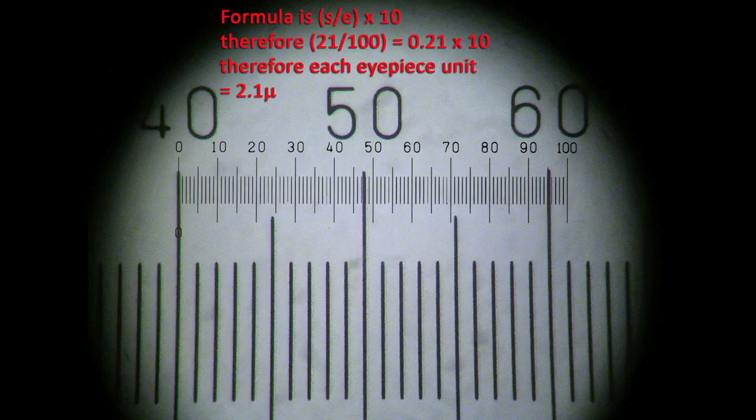So if with a 10x objective each IP unit was approximately 10 microns, then accordingly each unit using this 40x objective will represent 10 divided by 4, or 2.5, and our value of 2.1 microns supports that.